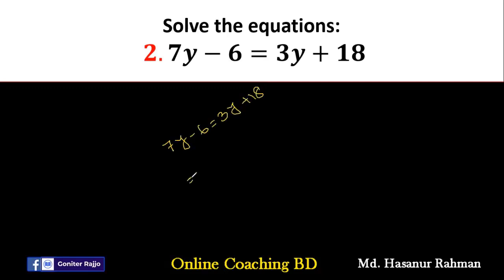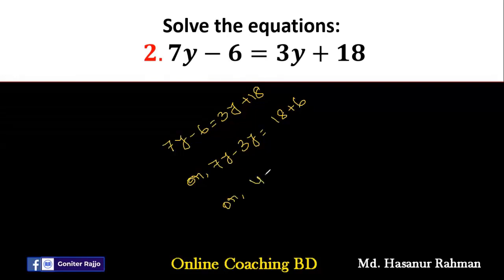At first, we have to move 3y to the other side and move minus 6 to the other side, giving plus 6. Now 7y minus 3y is 4y, equal to 18 plus 6, that will be 24.